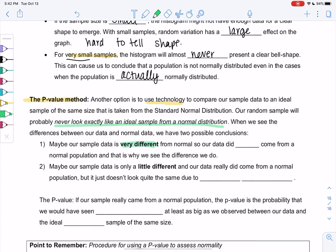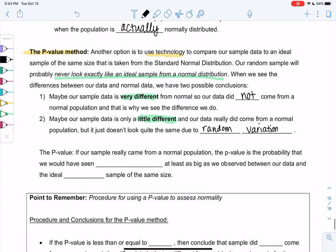It's either very different: our sample data is very different from normal, so it's so different it did not come from a normal population. That's why we see differences, because it's not normal. Or if it's only a little bit different like example 1, then maybe our data really did come from a normal population, it's just not quite the same due to random variation. Example 2 would be an example of it's so different it's definitely not normal. Example 1 was pretty close to normal but not normal normal, just a little off from random variation.